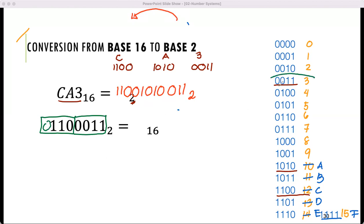0011 is 3. 0110 is 6. So this is 6. So the value is 63 base 16. And that's how you can write it. Thank you.